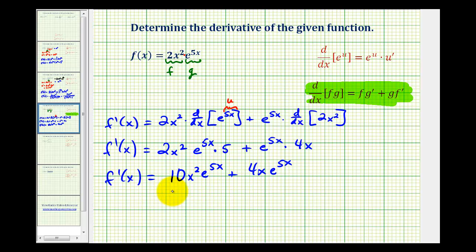On these types of problems, you'll normally see the final derivative in factored form. So the greatest common factor would have a factor of 2, a factor of x, and a factor of e to the power of 5x.